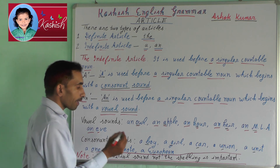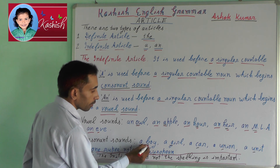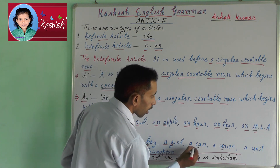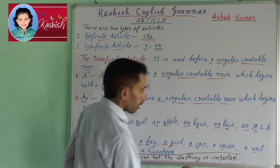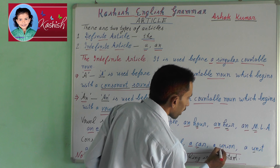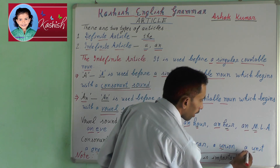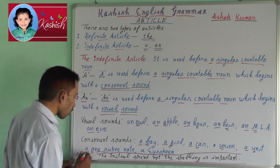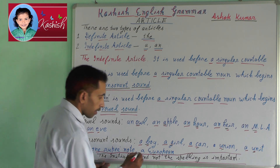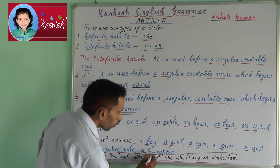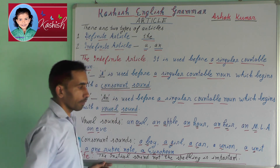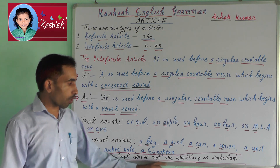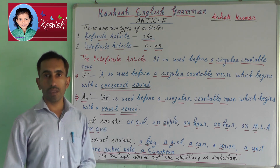Consonant sound. For example: a boy, a girl, a car, a union, a unit, a one rupee note, a European note. Note: the initial sound is important, not the spelling.